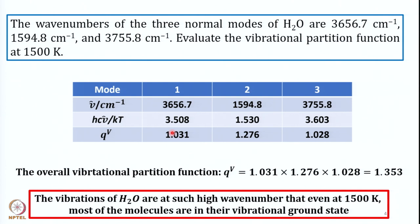After calculating the vibrational partition function for each normal mode, we need the overall vibrational partition function. As we have discussed, when considering the overall partition function, it is the multiplication of each individual partition function — energy is additive but partition function is multiplicative. So the overall vibrational partition function is qv1 × qv2 × qv3 = 1.031 × 1.276 × 1.028 = 1.353.